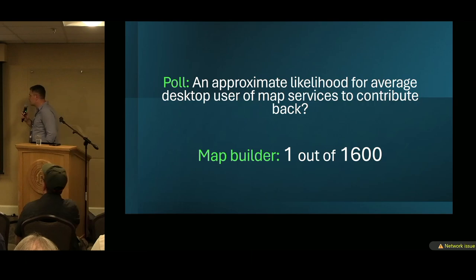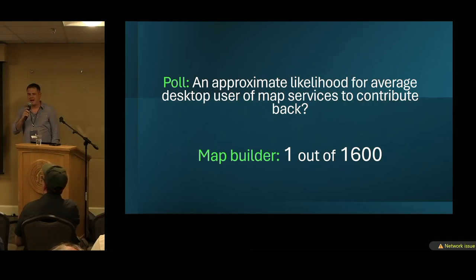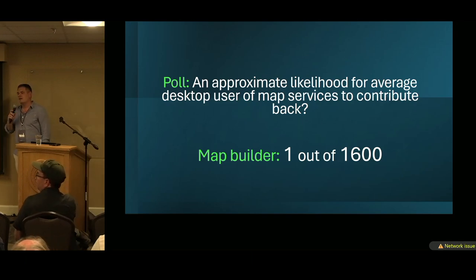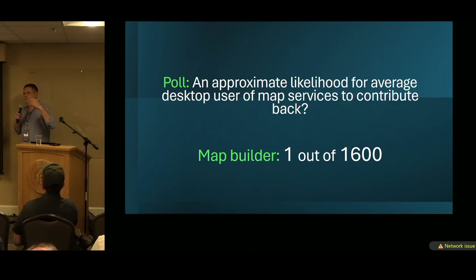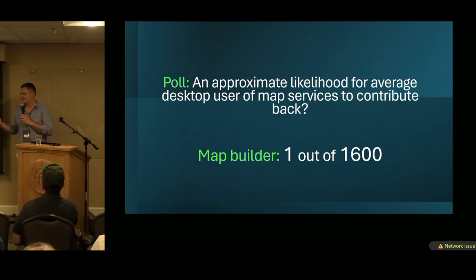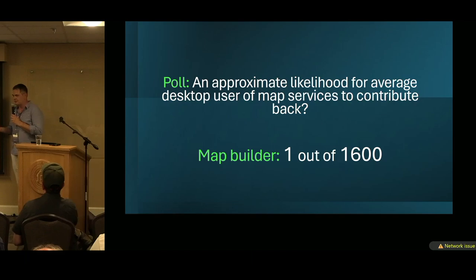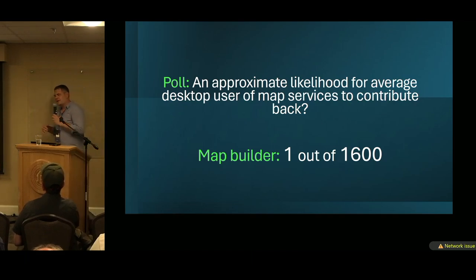And finally, the answer to the poll. I saw answers that were kind of close — one in 1,000, one in 5,000. The reason is exactly why I set up this logarithmic scale — I imagine this is quite an individual thing. Because for the one person who actually wants to contribute, it's 100% chance. For the person who doesn't want to contribute, it's 0% chance. So you're answering from your own internal bias.